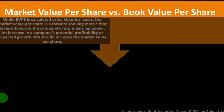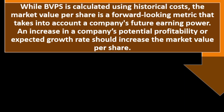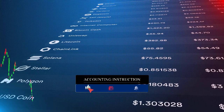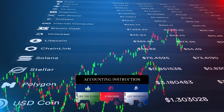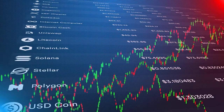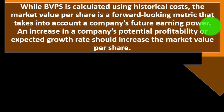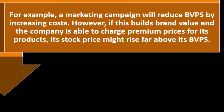Market value per share versus book value per share: while book value per share is calculated using historical costs, market value per share is a forward-looking metric that takes into account a company's future earning power. The market value is determined by the market — based on the books to some degree, but projecting into the future and considering future earning potential. Supply and demand drives it, and an increase in a company's potential profitability or expected growth rate should increase the market value per share. For example, a marketing campaign will reduce the book value per share by increasing costs; however, if it builds brand value and allows the company to charge premium prices, its stock price might rise above the book value per share.